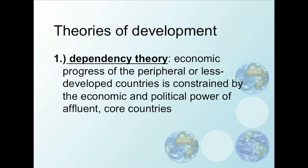There are a number of theories put forward to understand the process of development and the spaces of development throughout the world. These theories look at either the origin or effects of development, or the reasons for differences in development across countries. The first key theory is dependency theory. The idea is that the economic progress of peripheral or less developed countries is constrained by the economic and political power of affluent core countries. Poor countries are poor because they're exploited by rich, powerful countries, and rich countries are rich because they exploit poor countries. Dependency theory breaks the world into core countries that are developed and peripheral countries that are less developed.